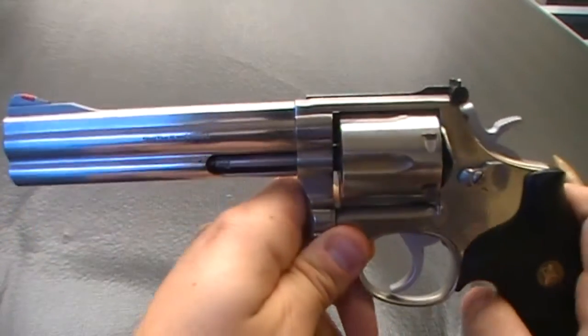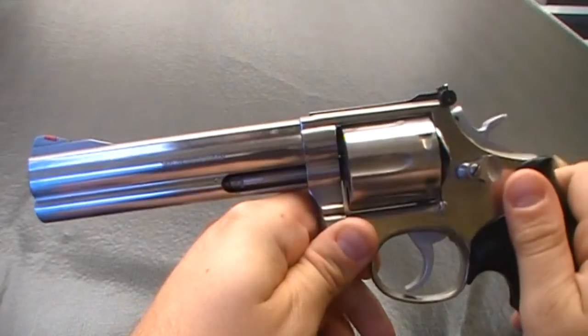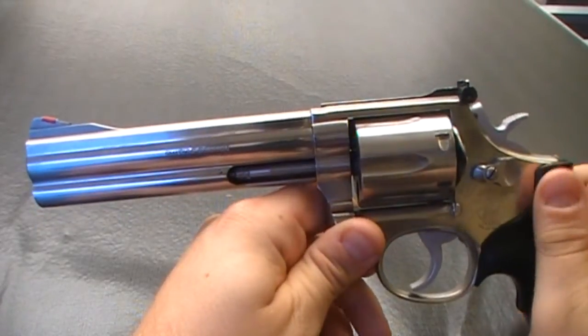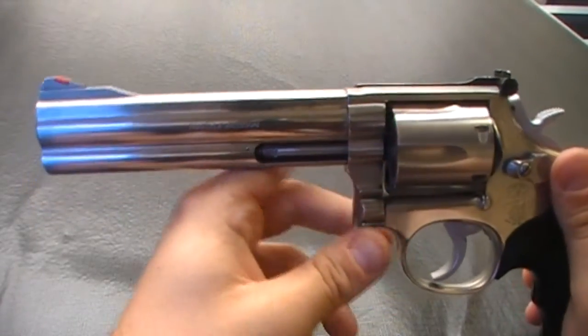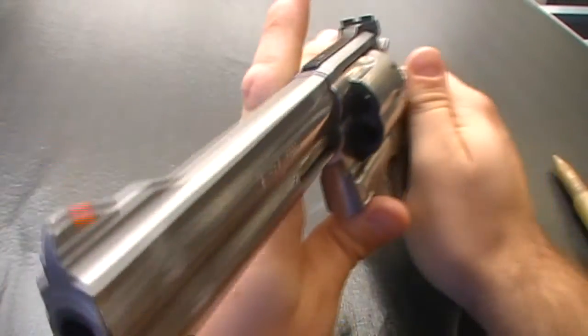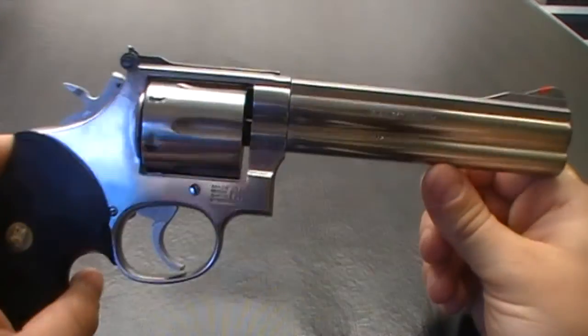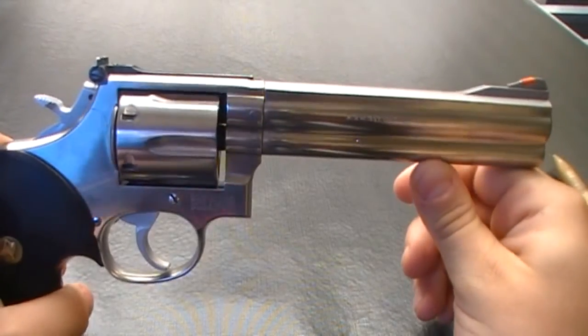This is before the number 4 so it doesn't have the pre-drilled and tapped for optics. So you would have to get that done by a gunsmith to drill and tap it to be able to fit one on there. And these go from anywhere to $500 to $1000 in Australia.